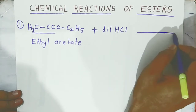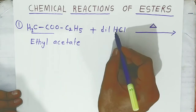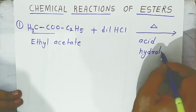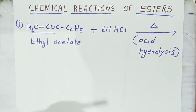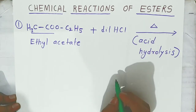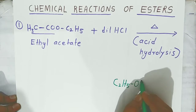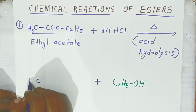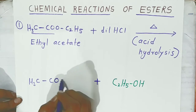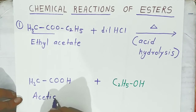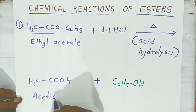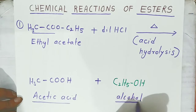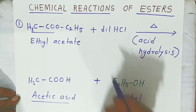In the presence of dilute HCl, you have to heat this solution. Because we have used acid, this is called acid hydrolysis. When hydrolysis takes place, there is a formation of ethyl alcohol (C2H5OH) and the ethyl acetate breaks to form CH3COOH — that is acetic acid. So from ester in presence of dilute HCl, you get two products: acetic acid and alcohol.